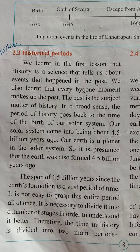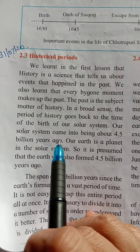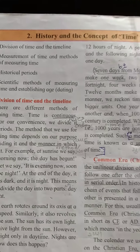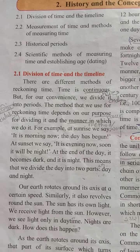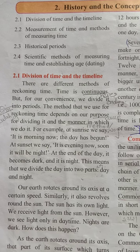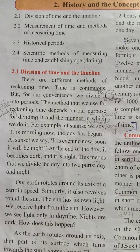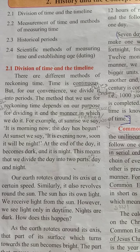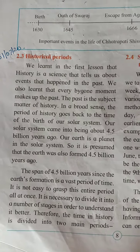Hello students. This is our UBS2 period and I am going to teach you Lesson Number 2: History and the Concept of Time. The first two points — 2.1 Division of Time and Timeline, and 2.2 Measurement of Time and Methods of Measuring Time — I had explained in the last lecture. This period, I am going to explain the third point: Historical Period.